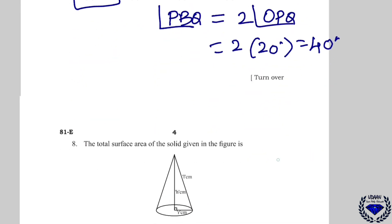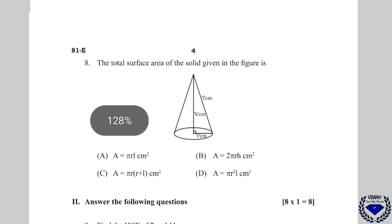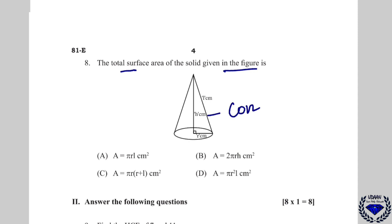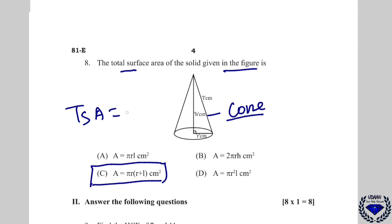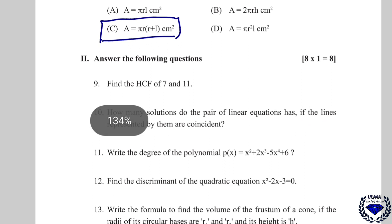Question number 8 is direct — just remember the formula. The figure shows a cone and they ask for the total surface area. TSA of a cone is πR(R + L). The correct answer is option C.